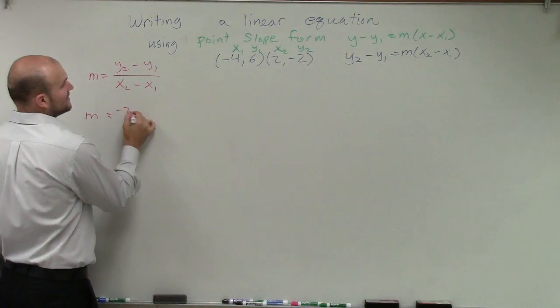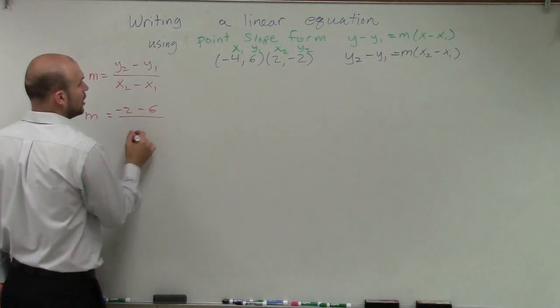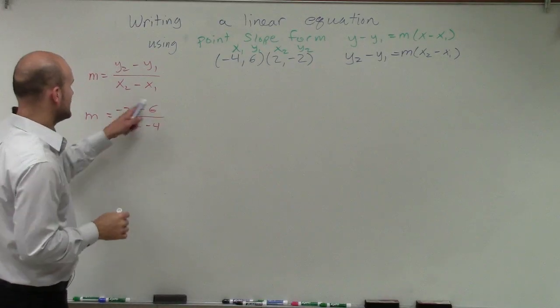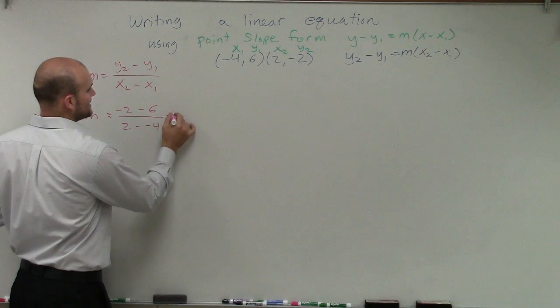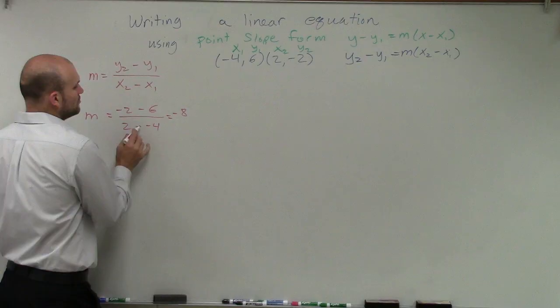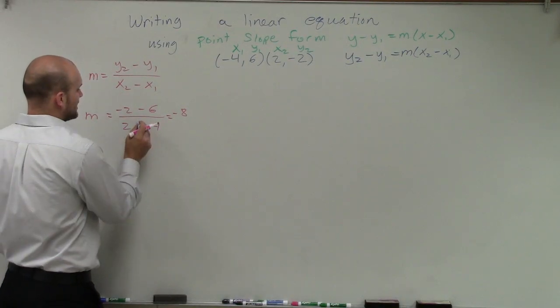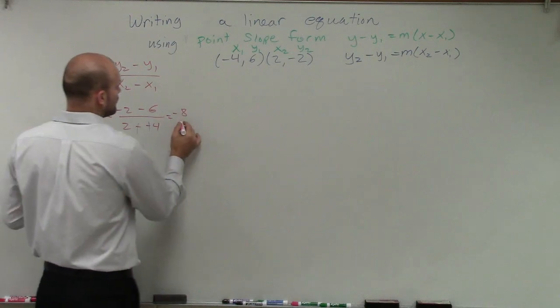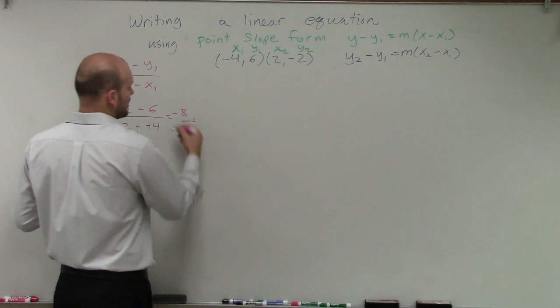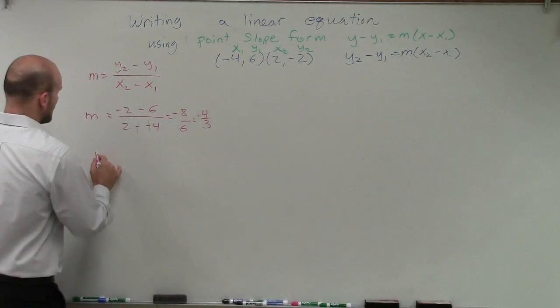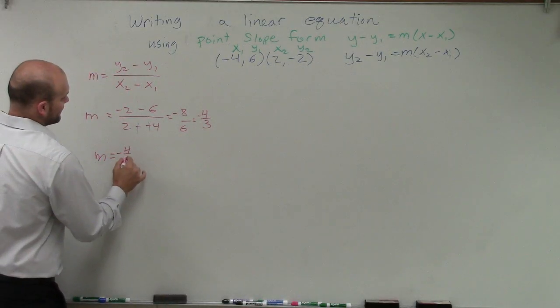So I have negative 2 minus 6 all over 2 minus negative 4. Well, negative 2 minus 6 is going to be negative 8. 2 minus negative 4 is going to be a double positive, so that will make it positive over 6, which equals negative 4 thirds. So now we know m equals negative 4 thirds.